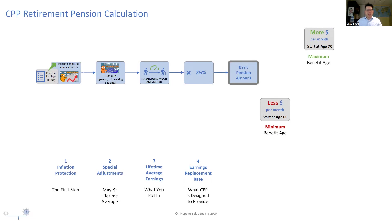You can start taking CPP on any month between age 60 and age 70. The later you start, the more you'll get. That's the trade-off: you can get money earlier, but if you do that you'll get less. Or you can get more money if you start later. Your lifetime average earnings is the size of your personal slice of the CPP pie, and the age you start CPP determines how big the CPP pie is for you.